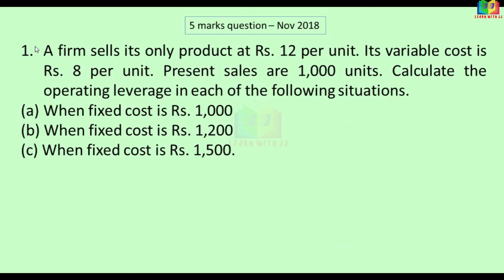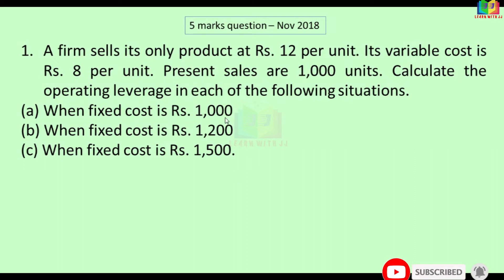First problem: a firm sells its only product at rupees 12 per unit. Its variable cost is 8 per unit. Present sales are 1000 units. Let's calculate the operating leverage. We'll look at selling price per unit, variable cost, sales, contribution, and fixed cost. Let's talk about this problem in 3 columns. Fixed cost is 1000, 1200, and 1500.